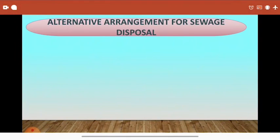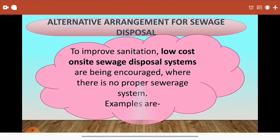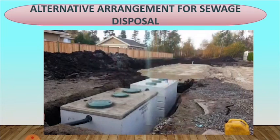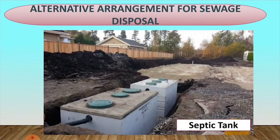Alternative arrangements for sewage disposal: we have learned that poor sanitation is the cause of a large number of diseases. To improve sanitation, low-cost on-site sewage disposal systems are being encouraged where there is no proper sewage system. One example is a septic tank — a tank, typically underground, in which sewage is collected and allowed to decompose through bacterial activity before draining.